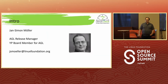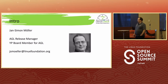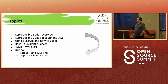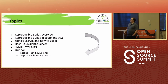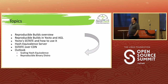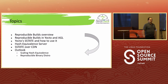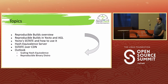I'm Jan-Simon Müller. I'm the release manager and I'm also doing the continuous integration and automated testing within AGL, and I'm on the Yocto project board for AGL. Today I will give a quick overview about reproducible builds to explain what it is, show how it's done within Yocto project and AGL, how you can use S-State, how the hash equivalent server works, what is being done to improve speeds using a content delivery network, and an outlook on how everything will fit together in the end.